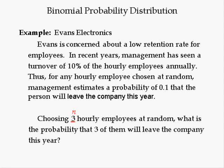Choosing three employees at random — this is the number of trials — what is the probability that three of them will leave the company this year? The number of successes is the number that follows the phrase 'what is the probability?' Will leave the company this year is 'success.' Hence, the probability of success is 0.1, and will not leave the company this year is a failure.